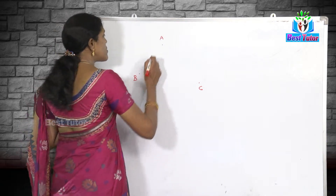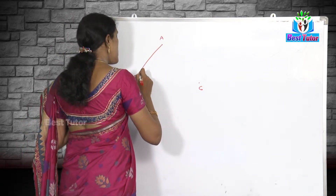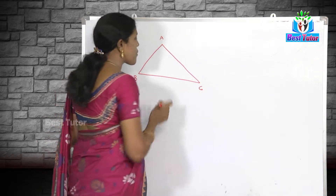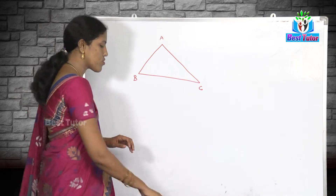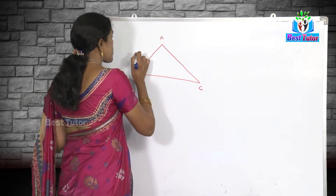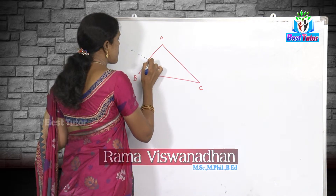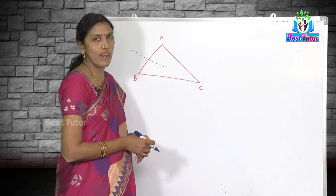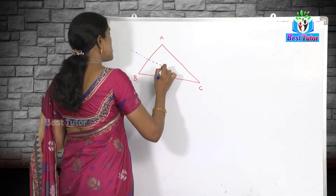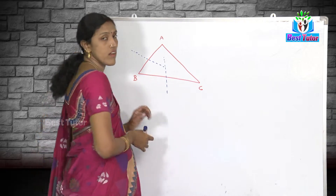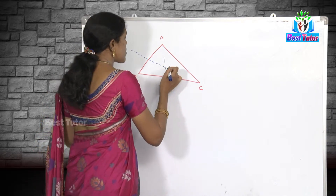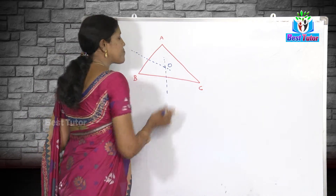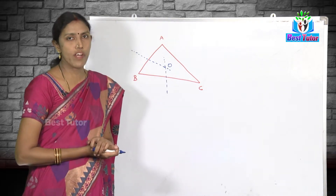Let us first join AB, BC, and AC. When there are three non-collinear points, a triangle can always be formed. I am going to draw a perpendicular bisector of AB, and similarly construct a perpendicular bisector of BC. These two lines are going to intersect at one point — let me assume that this point is O.